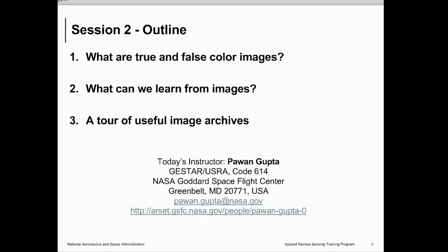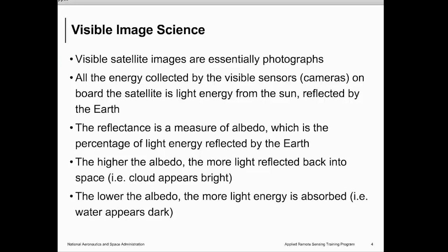Today we will learn about the science of visual images. These visual satellite images are essentially photographs, just like what we take from our camera — energy collected by the visual sensor. This is light energy which reflects from objects on the earth as incoming solar radiation. As we learned in week 1, the sun sends out energy and it reflects back to space, and the satellite captures that reflected light in different spectral channels. The reflectance is a measure of albedo — the percentage of light reflected by the earth's surface or any other surface.